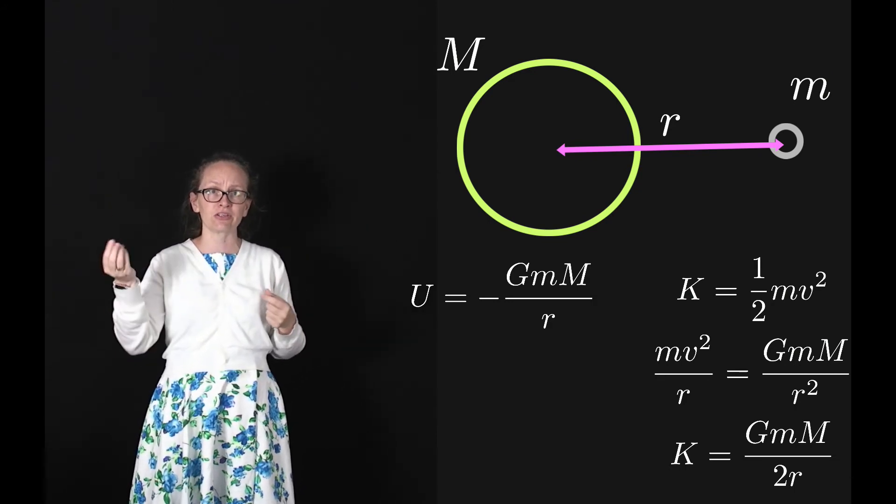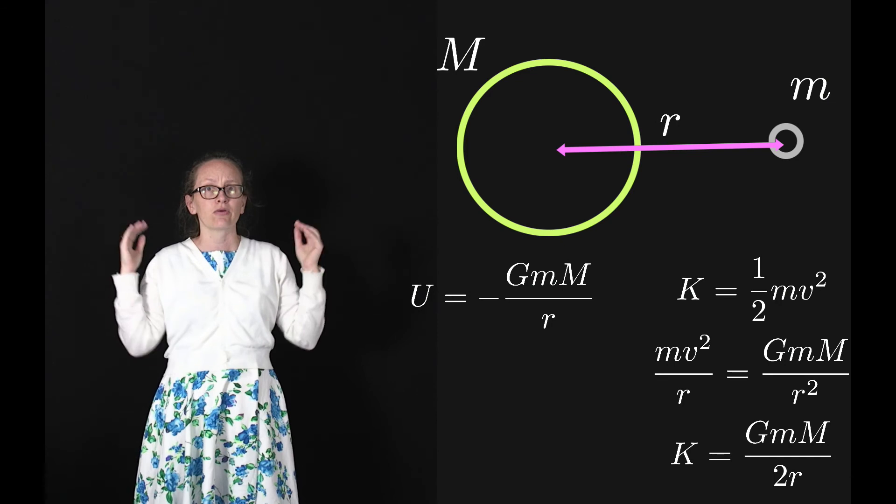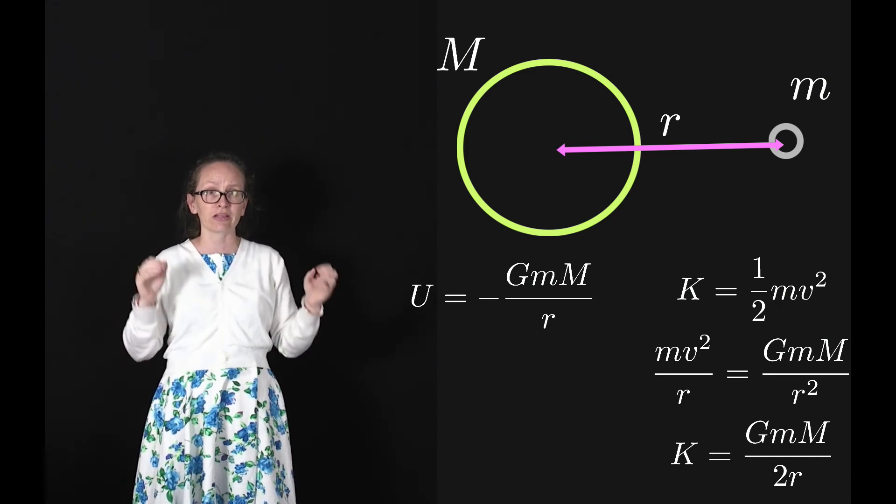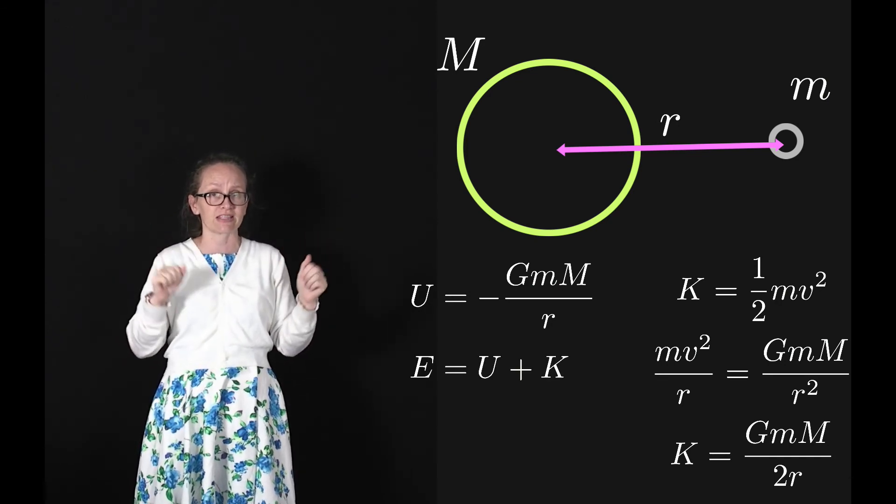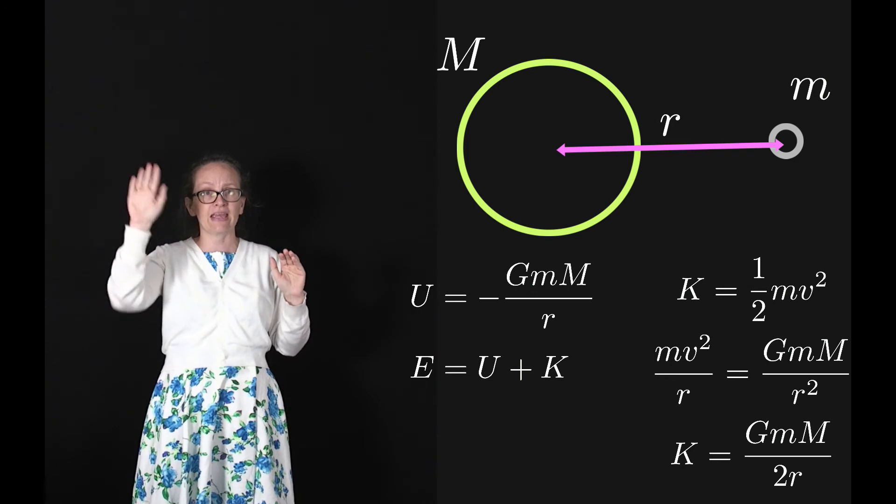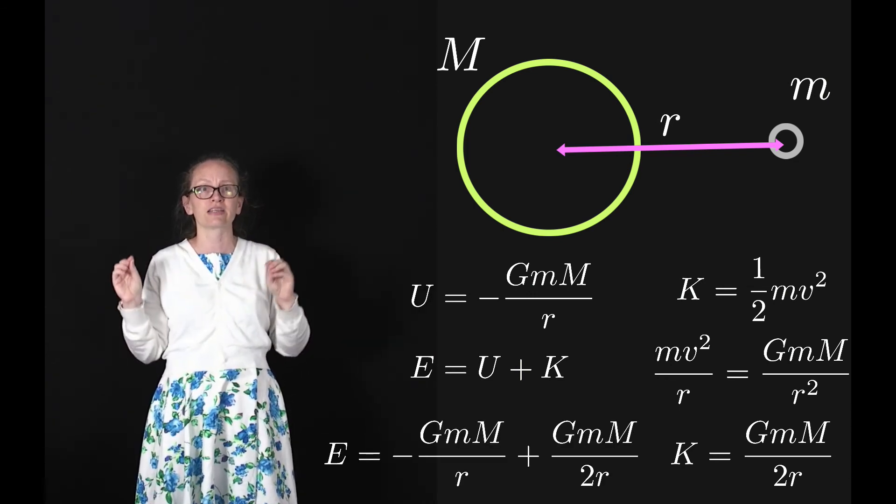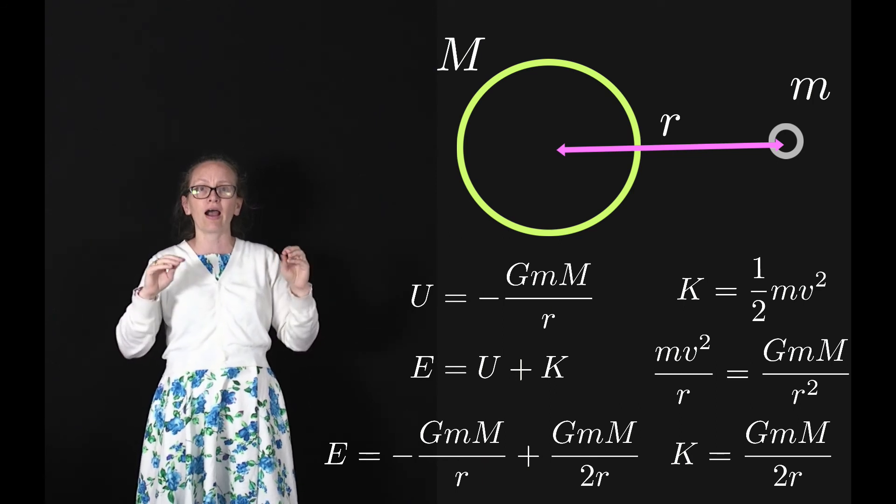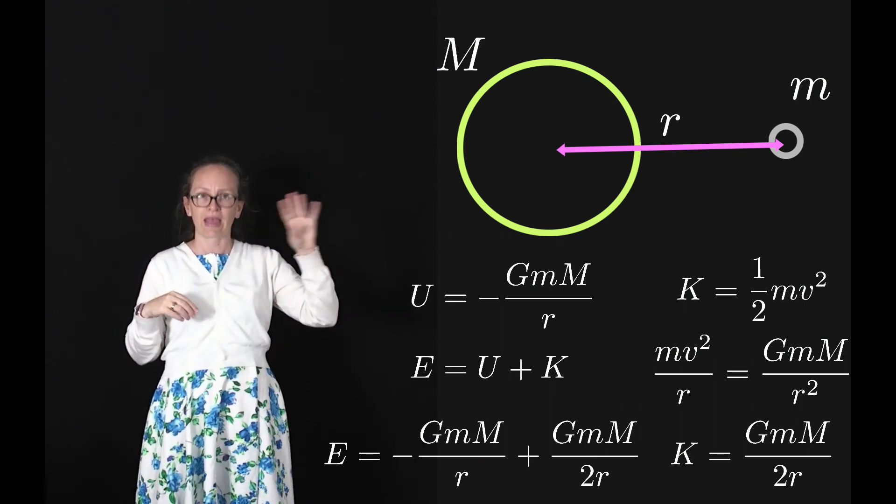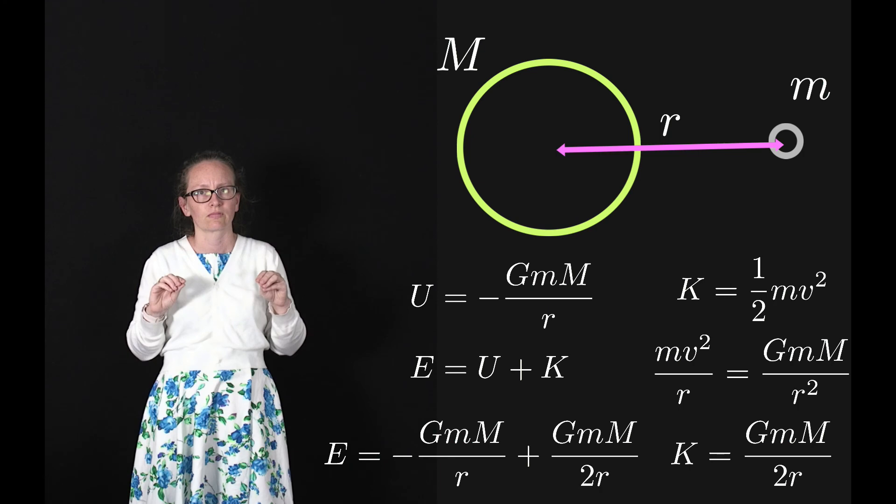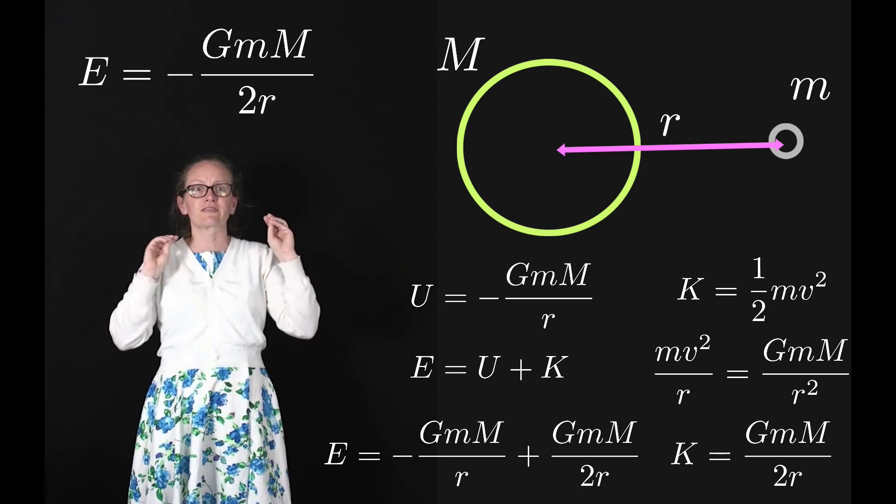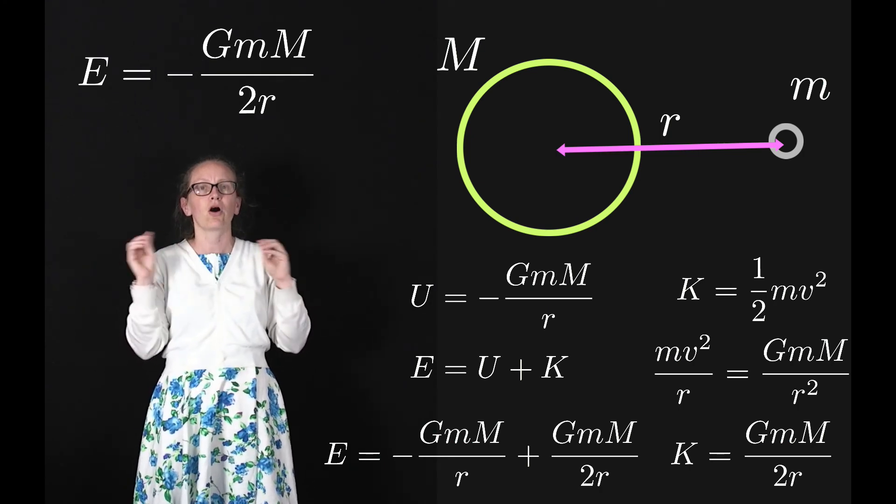If we've got the potential energy and the kinetic energy, we can then work out the total mechanical energy, which is just the sum of these. We can write E = U + K, and this is going to be equal to -GmM/r + GmM/2r. Summing these two gives us -GmM/2r.